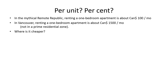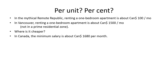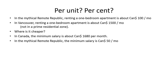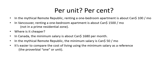How could we compare? It is easier to compare if we use a reasonable reference, perhaps the minimum monthly wage in each country. In Canada, the minimum salary is about $1,700 a month. In the mythical remote republic, the minimum salary is $15 a month. Divide in each country the rent by the salary and we get the per-unit cost of renting in each country.